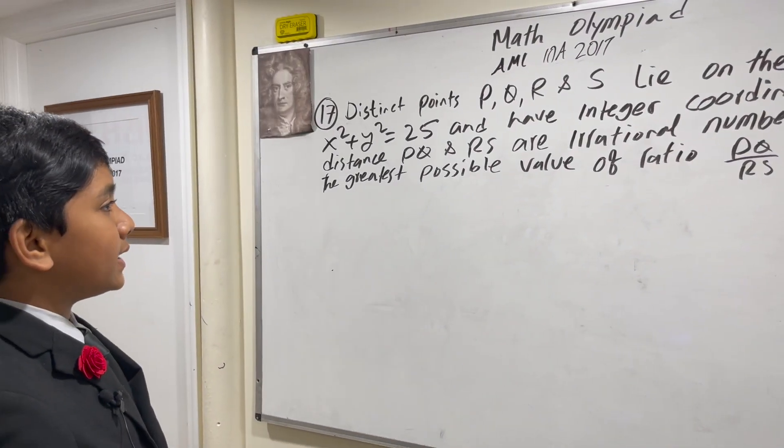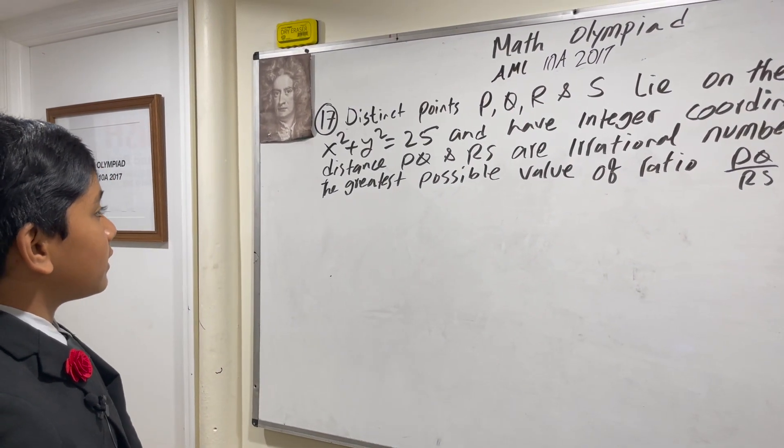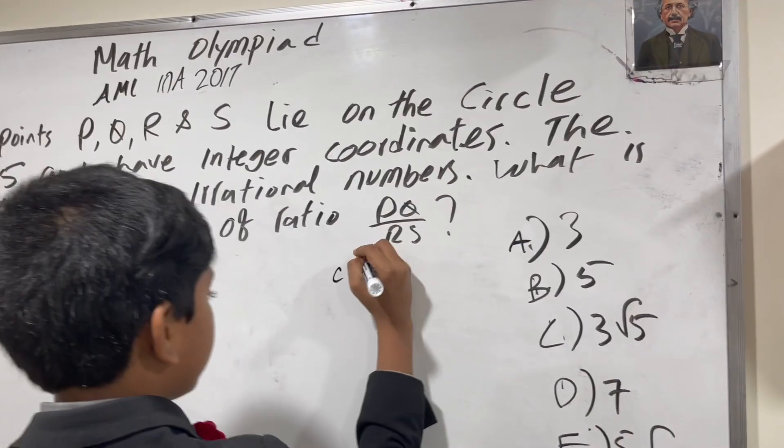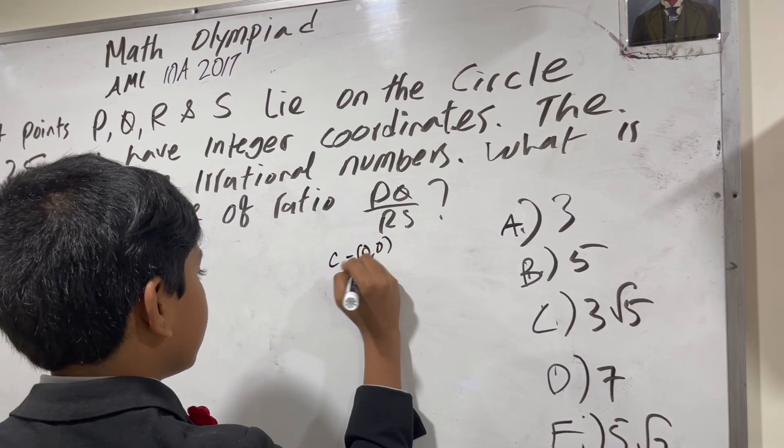Points P, Q, R, and S lie on the circle x squared plus y squared equals 25. Note this: center equals (0,0), radius equals 5.